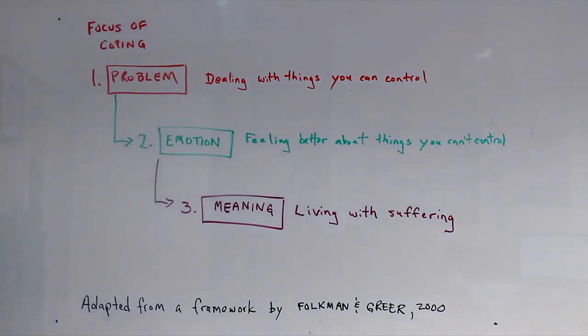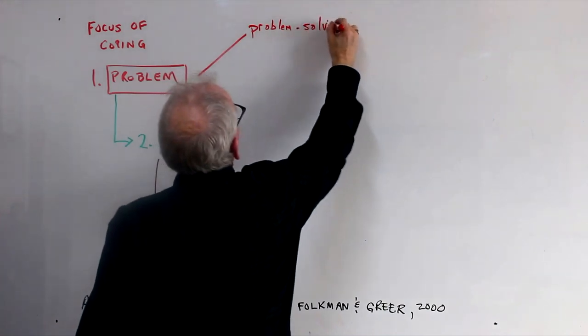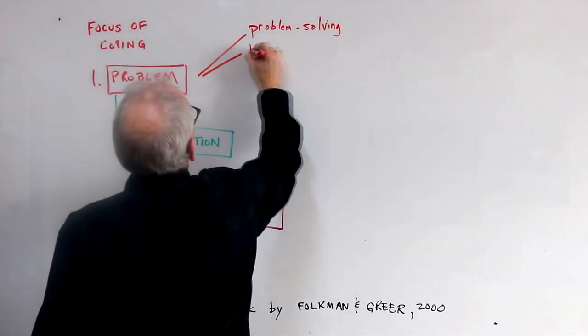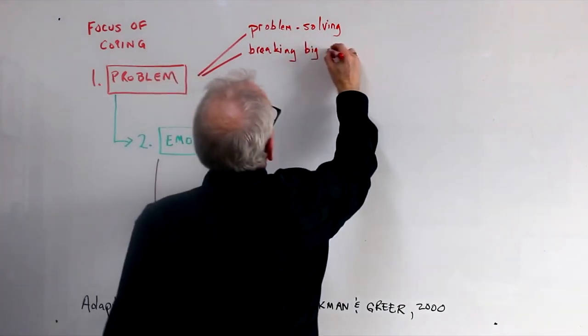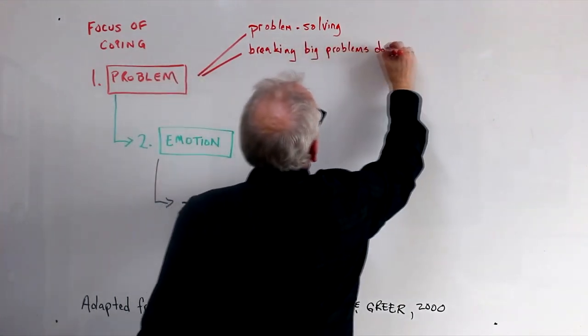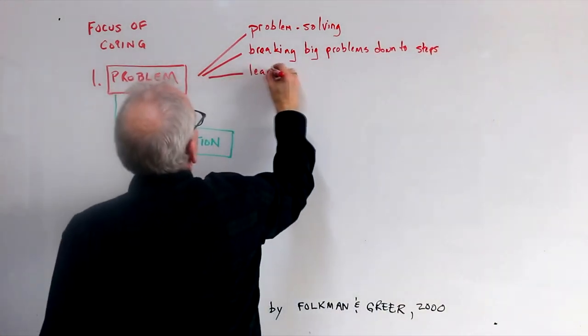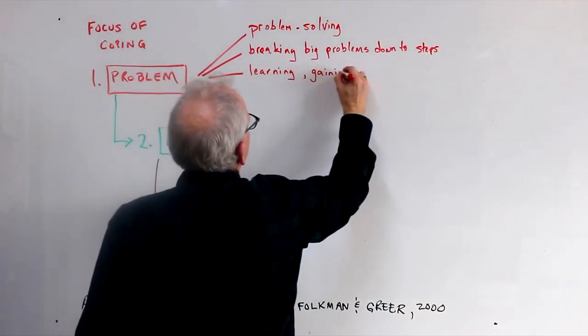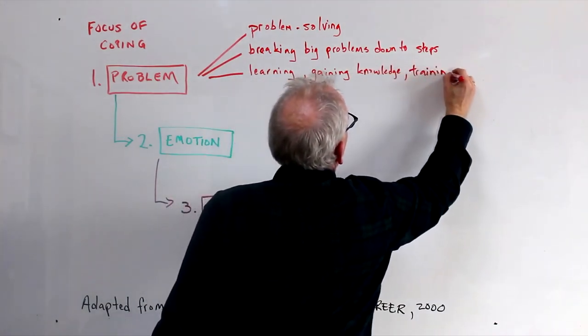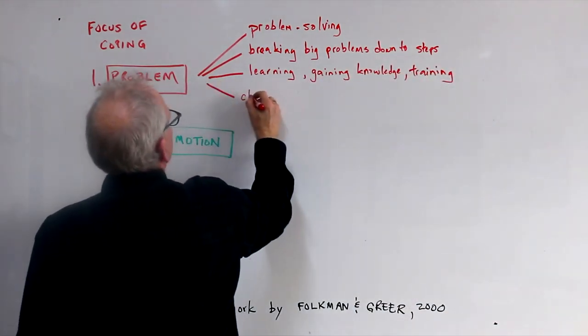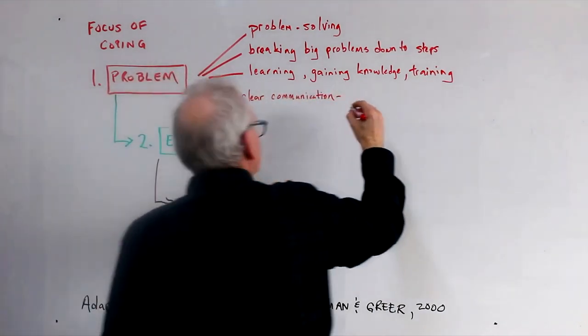We can break those three steps down a bit, starting with problem-focused coping, the type of coping that most of us use most often. Some of the most constructive approaches are to work on practical ways to solve the problem, to break big unmanageable challenges down into easier pieces and do one thing at a time, to learn about the challenge by seeking out information or getting training and useful skills, and to communicate clearly with others so that we can combine our efforts to solve the problem.